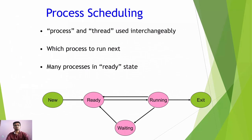This is process scheduling. The terms process and job are used interchangeably. Which process to run next? Many processes may be in the ready state. Here you can see a flowchart of process scheduling showing the ready and running states.